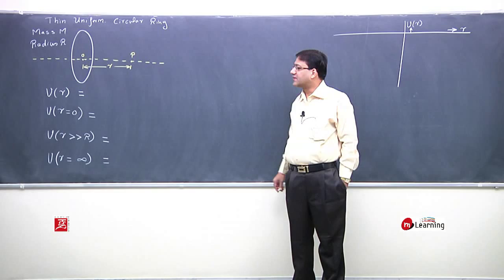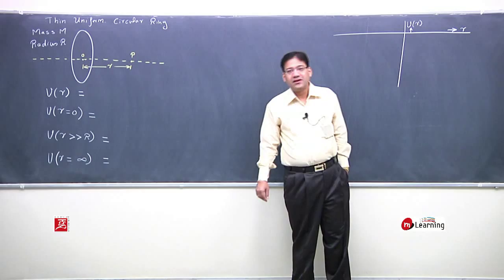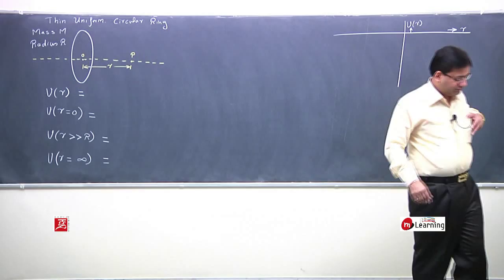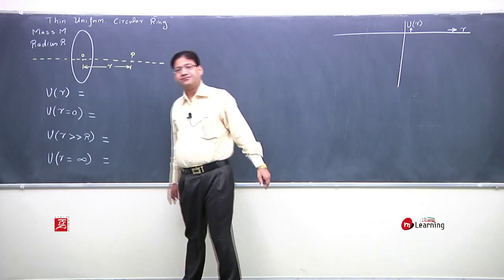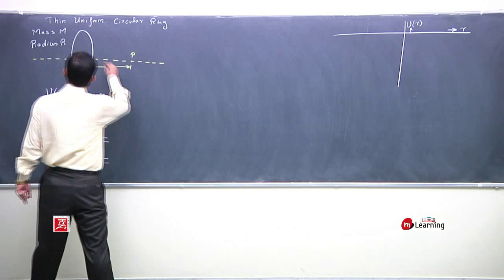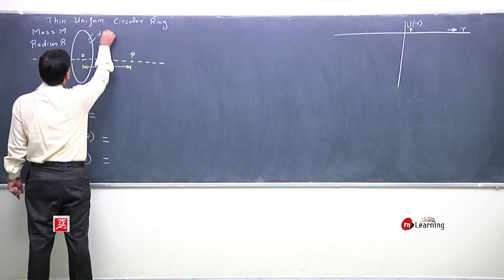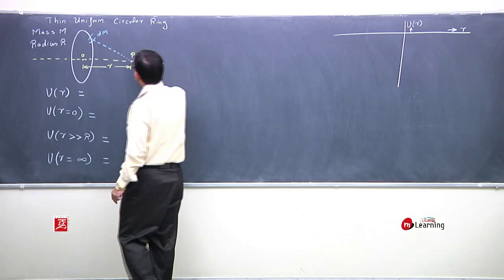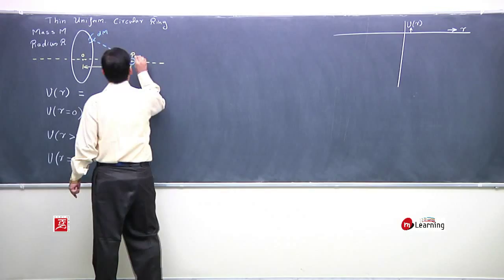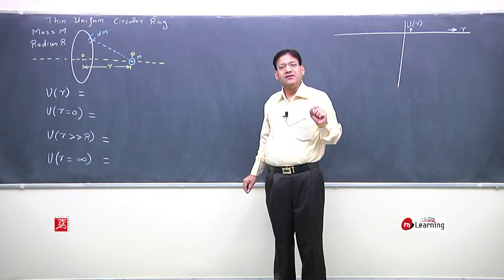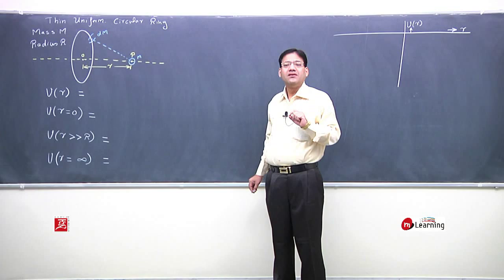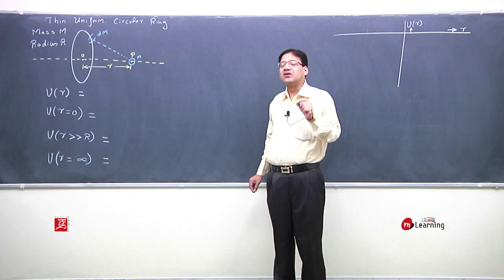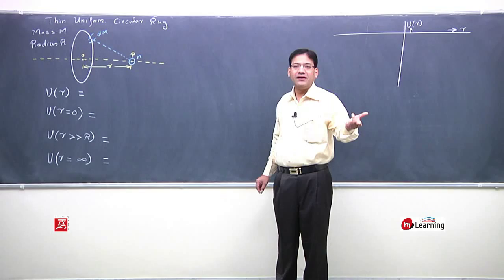You can think over it. Now let me carry on the discussion. Take the ring. I am taking a small mass dm on the ring. Small test mass m is the potential energy to determine of small test mass M, 1 kg. So this 1 kg mass, whatever potential energy it has, that will be the gravitational potential according to our definition.